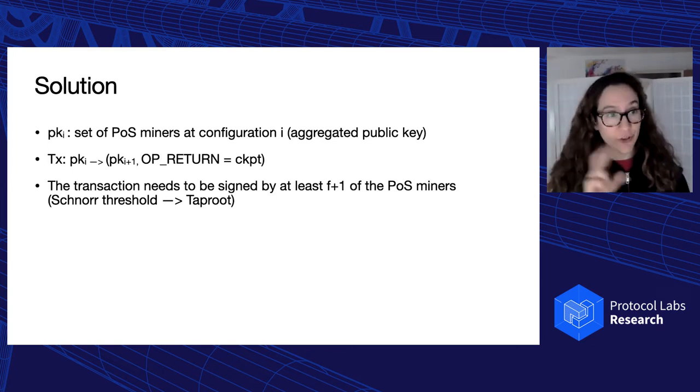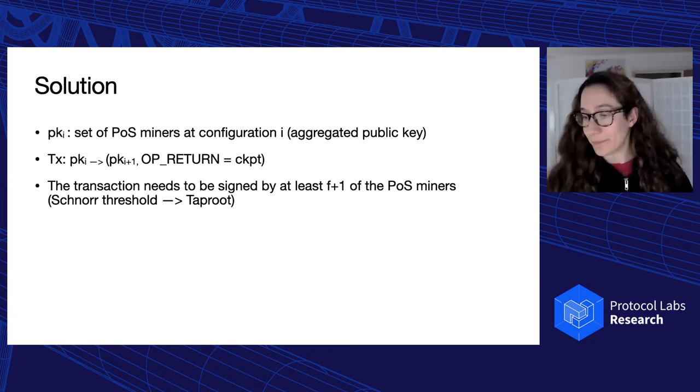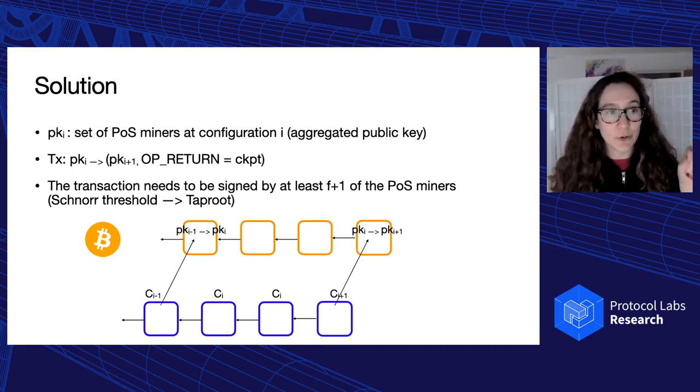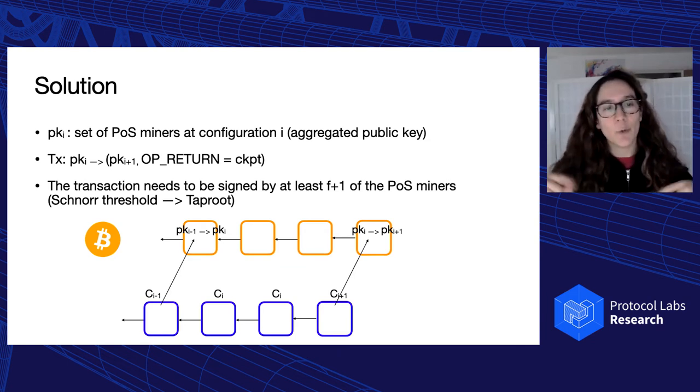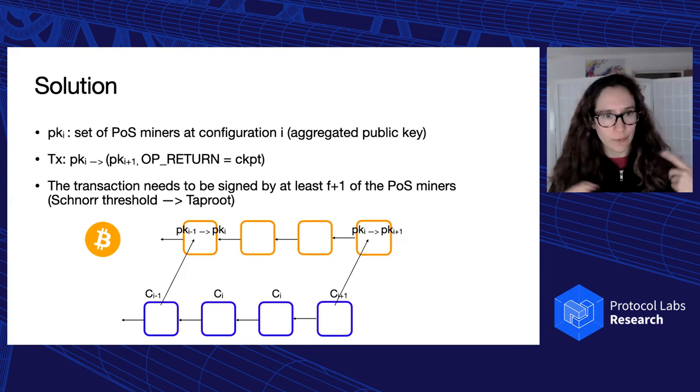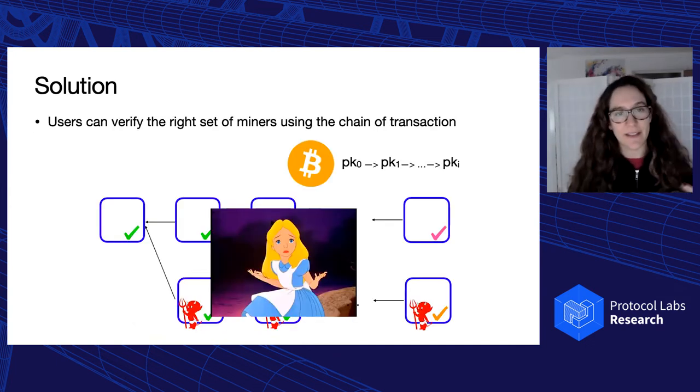So the transaction will need to be signed by at least F plus one miners, where F is the number of adversaries, so this is just because we don't want an adversary to be able to push a fake checkpoint. We are going to leverage the Taproot upgrade that is coming to Bitcoin in November. And so we are going to use Schnorr threshold signature in order to do this. So again, let me illustrate this. So here we see that the configuration I minus one will update the public key on the Bitcoin blockchain from PKI minus one to PKI. And then later on, the new configuration CI will do again the update from PKI to PKI plus one, such that really we are rolling and the current configuration is in charge of pushing the checkpoint.